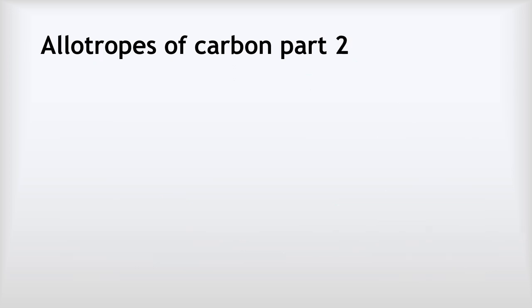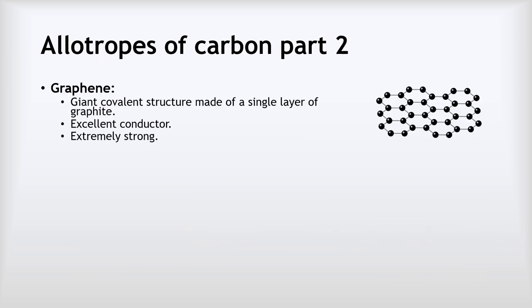Now we have a few more allotropes of carbon. The next one is graphene. This is a single layer of graphite, so we've got the atoms joined in this honeycomb pattern, each of them bonded to three other carbon atoms, but it's only a single layer.